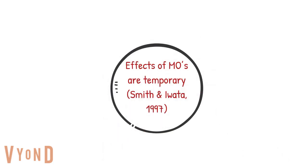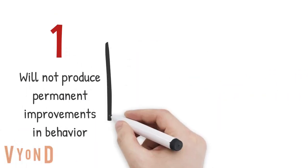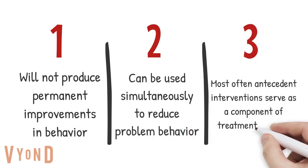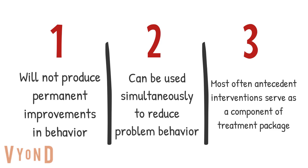The effects of motivating operations are not permanent. If a motivating operation is that somebody was hungry, then food becomes an increasingly effective reinforcer, but that will come back because they will become hungry again. Because it's not permanent, it won't produce permanent behavior changes. It can be used to reduce problem behavior, and it's part of a treatment package.